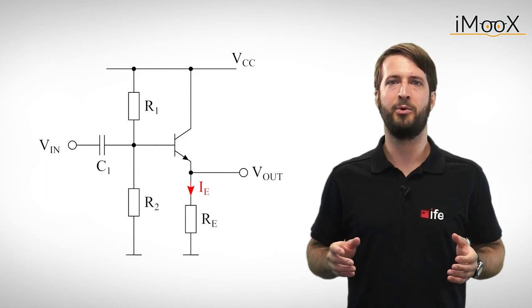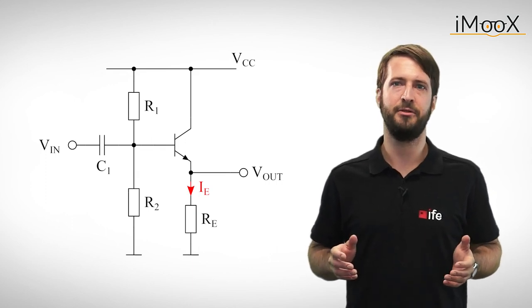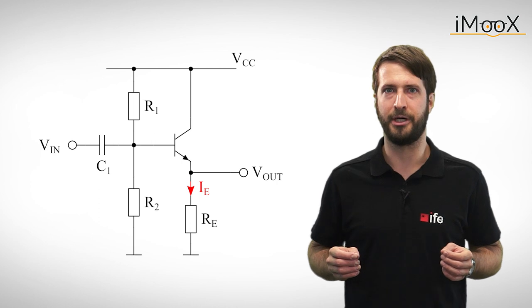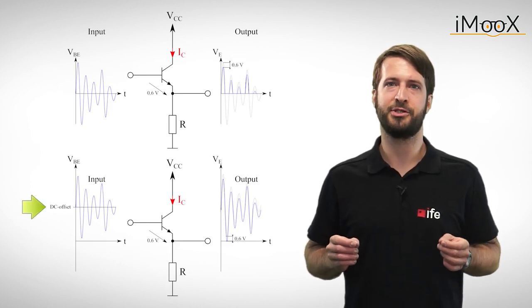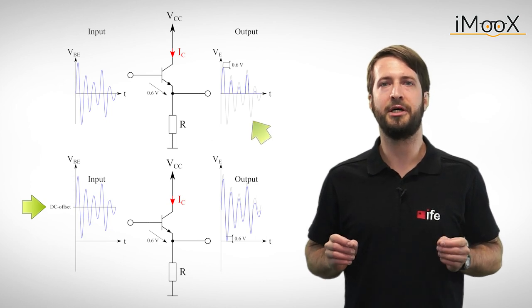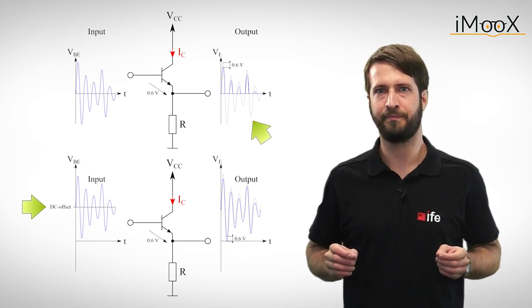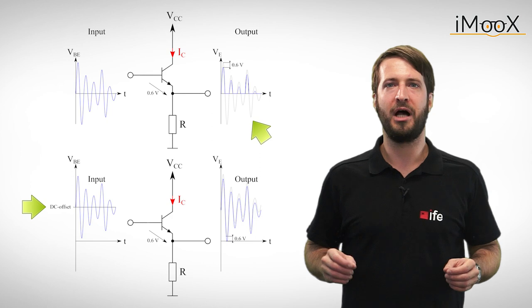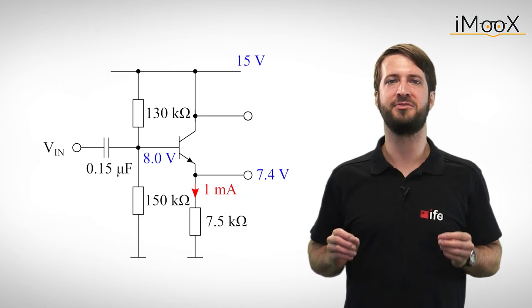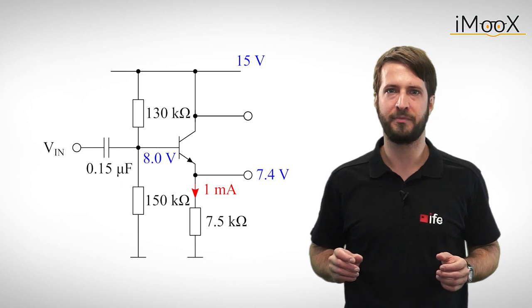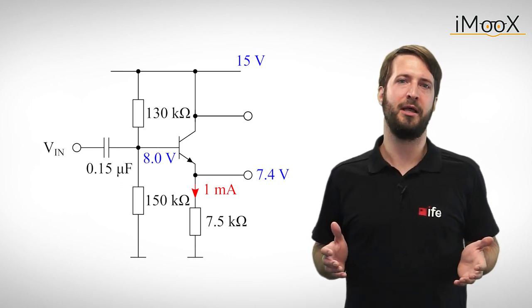So let's pick up where we left off in our last video by considering the emitter follower. We already know that we have to bias the voltage at the base in order to not run into trouble with clipping. We also know how to calculate the component values to be able to amplify a small alternating signal. But this circuit will only amplify currents.